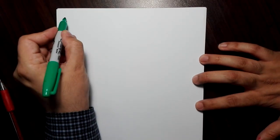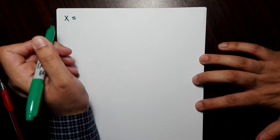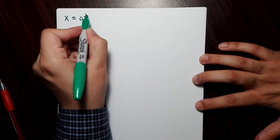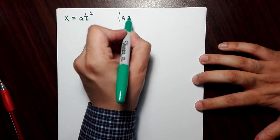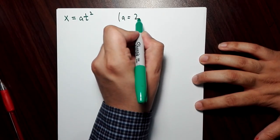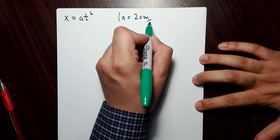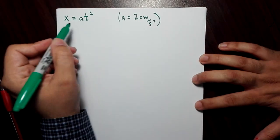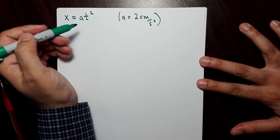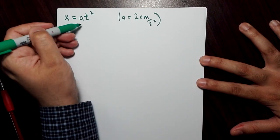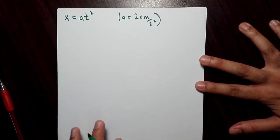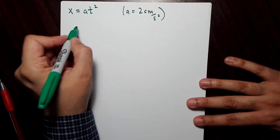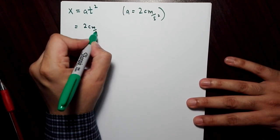Let's look at a situation where your position is a function of time. The position is given by x equals a times t squared, where a is equal to two centimeters per second squared. The dimensions of a would be length over time squared, because the time squared should cancel out to give you length. We can write this as two centimeters per second squared times t squared.